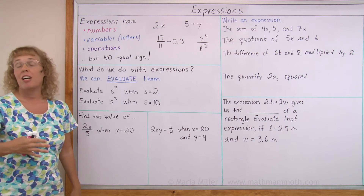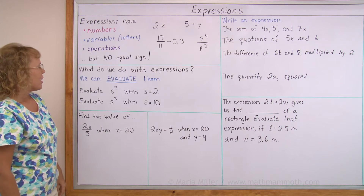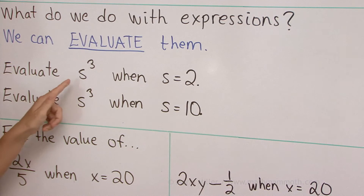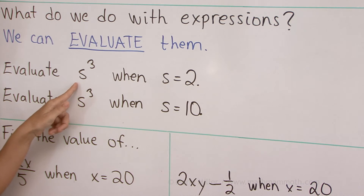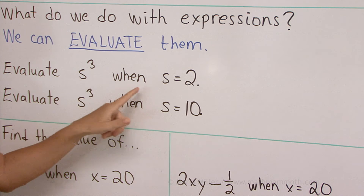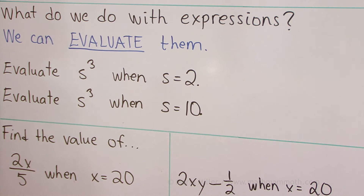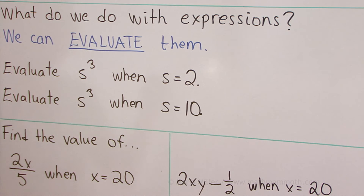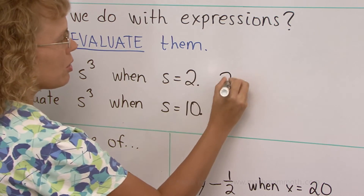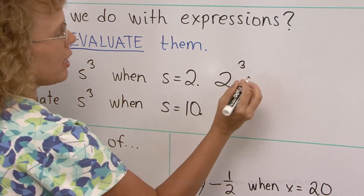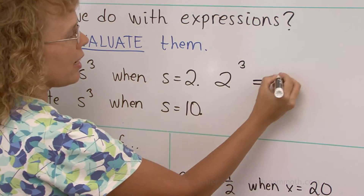Another thing we can do is evaluate expressions. That means that if the expression has a variable — a letter — then we give it a value. For example, evaluate s to the third power, or s cubed, when s equals 2. This means that I take the 2 and put it in here in place of s. So I get 2 cubed, and now I can calculate the actual value of this expression. It is 8.